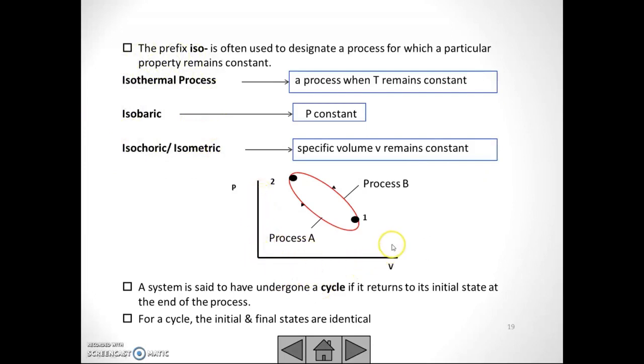This is the graph, an example of a graph. A system is said to have undergone a cycle if it returns to its initial state at the end of the process. For example, we have process A from 1 to 2. This is the initial state, this is the final state.